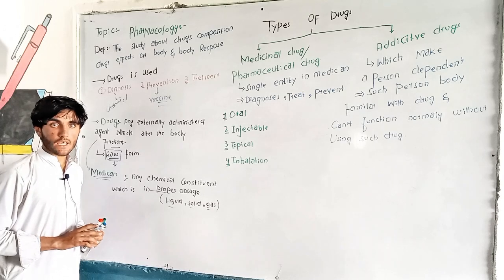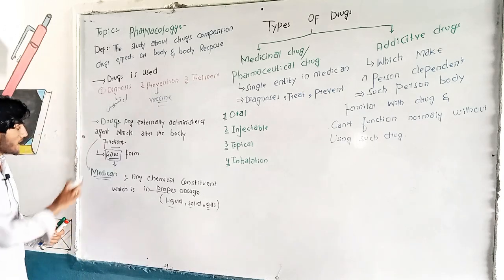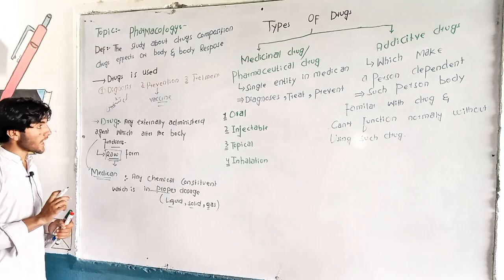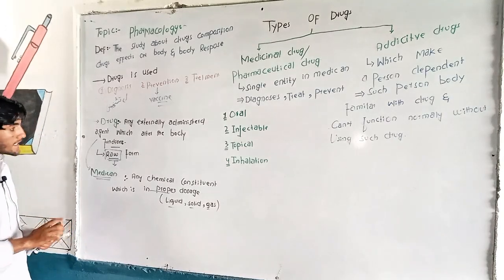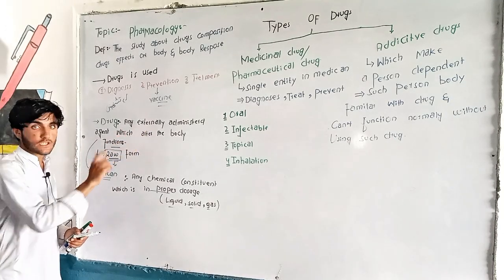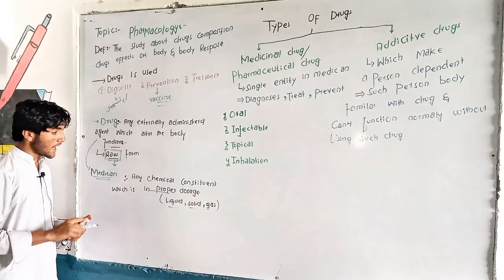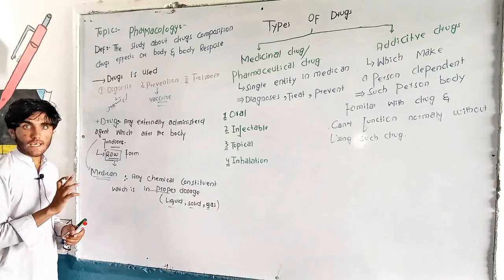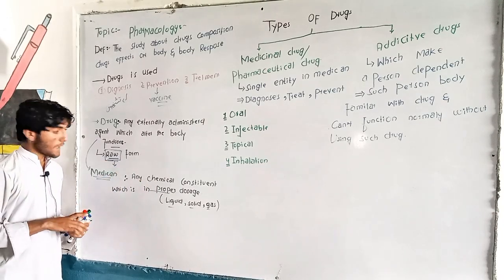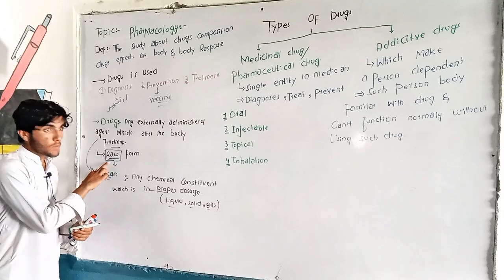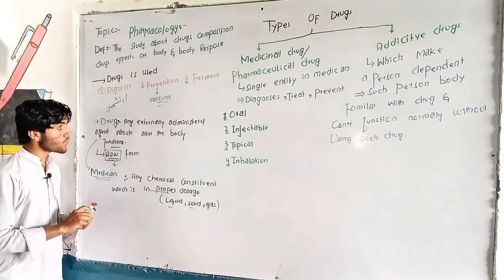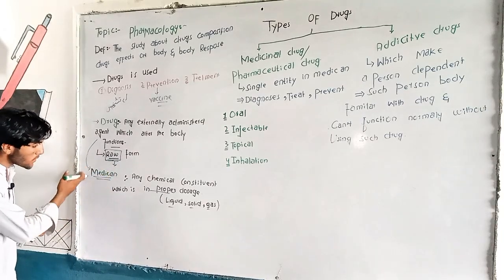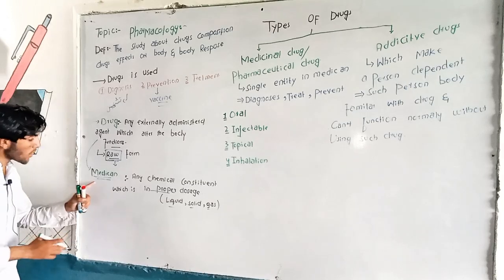There is a small difference between drug and medicine. A drug is an external or chemical constituent which is in raw form. If there is no modification, it is called a drug — meaning if you have it in raw form, it is a drug.